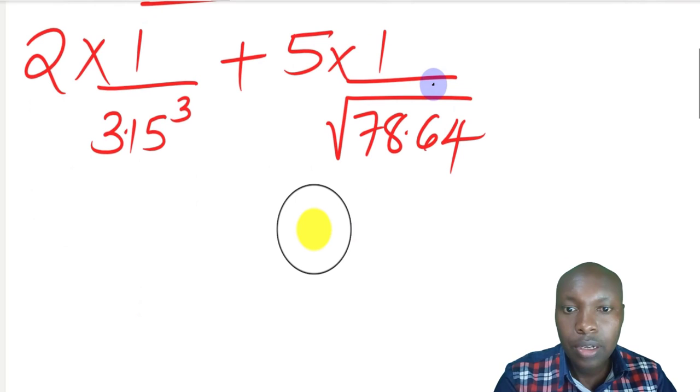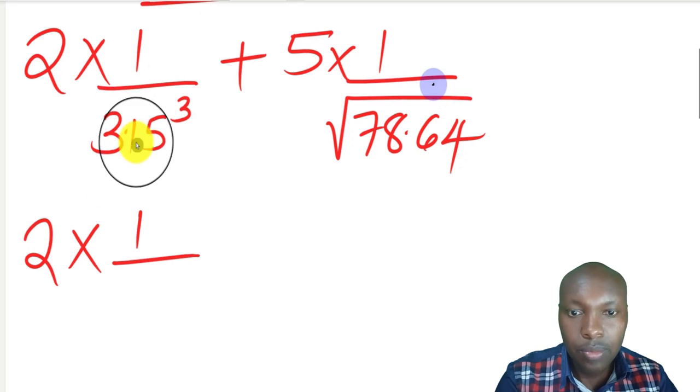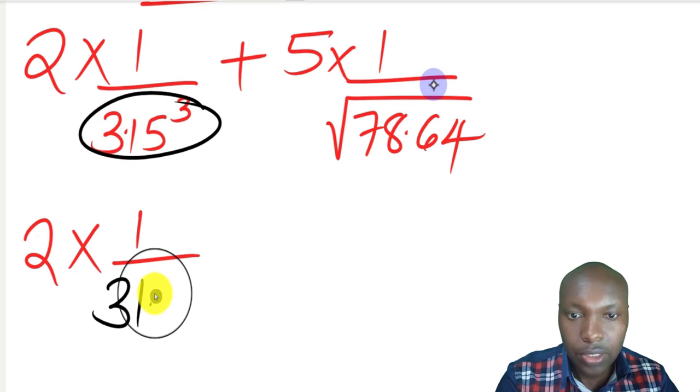The second step will be to get the cube of this number. We get 2, then we get 1 divided by the cube of 3.15 from the table. When you read it, we get 31.256.